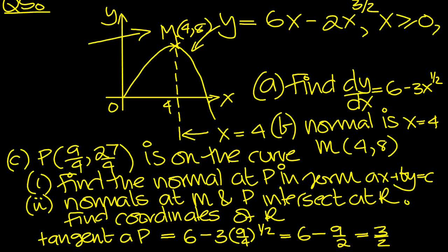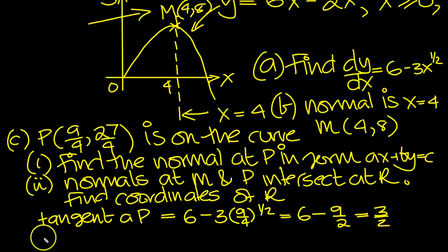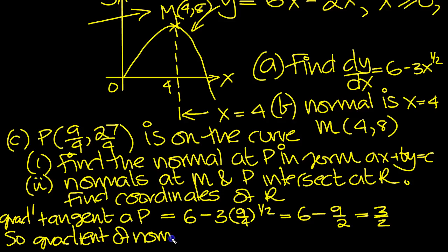So gradient of normal is going to be equal to minus 2 thirds, isn't it? Because this product will give minus 1. So that's the gradient of the normal at P.